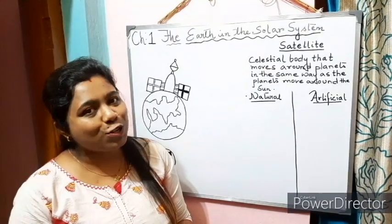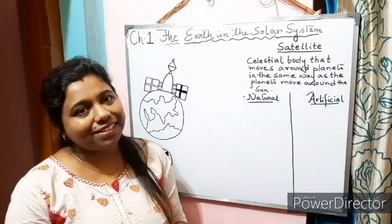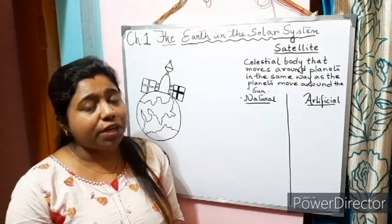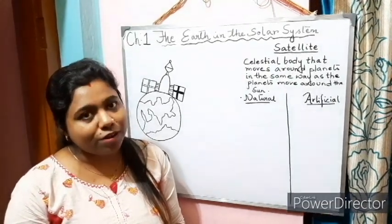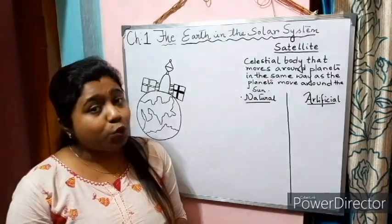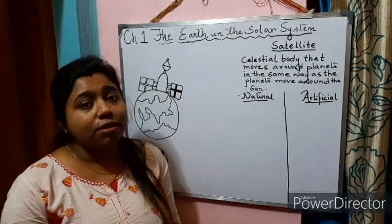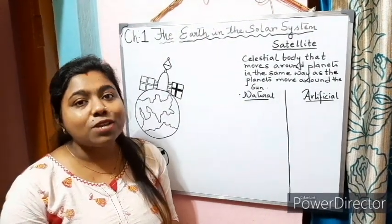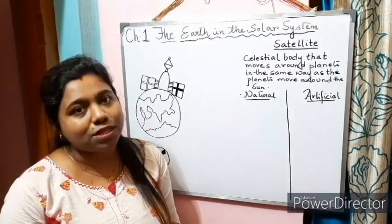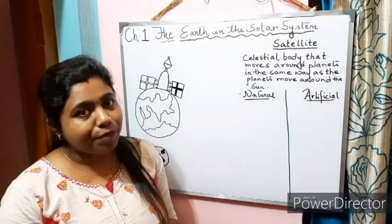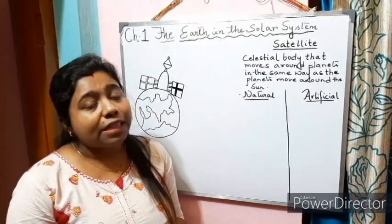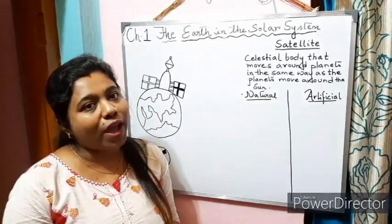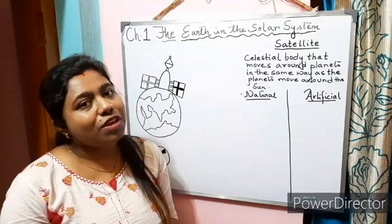Hello class 6, how are you all doing? I hope all of you are fine. This is your DJ ma'am again. In the last video, we covered some topics of chapter 1 - The Earth in the Solar System. We learned about the solar system, the eight planets, our unique planet Earth, and the only natural satellite of Earth, that is the Moon. Now let us go ahead with the definition of satellite.